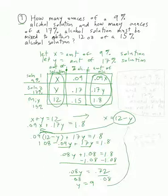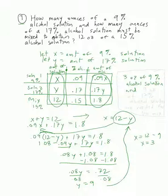Once I get y equals 9, I can plug it back into x equals 12 minus y, which gives x equals 12 minus 9, or x equals 3. The answer is 3 ounces of 9% alcohol solution and 9 ounces of 17% alcohol solution.